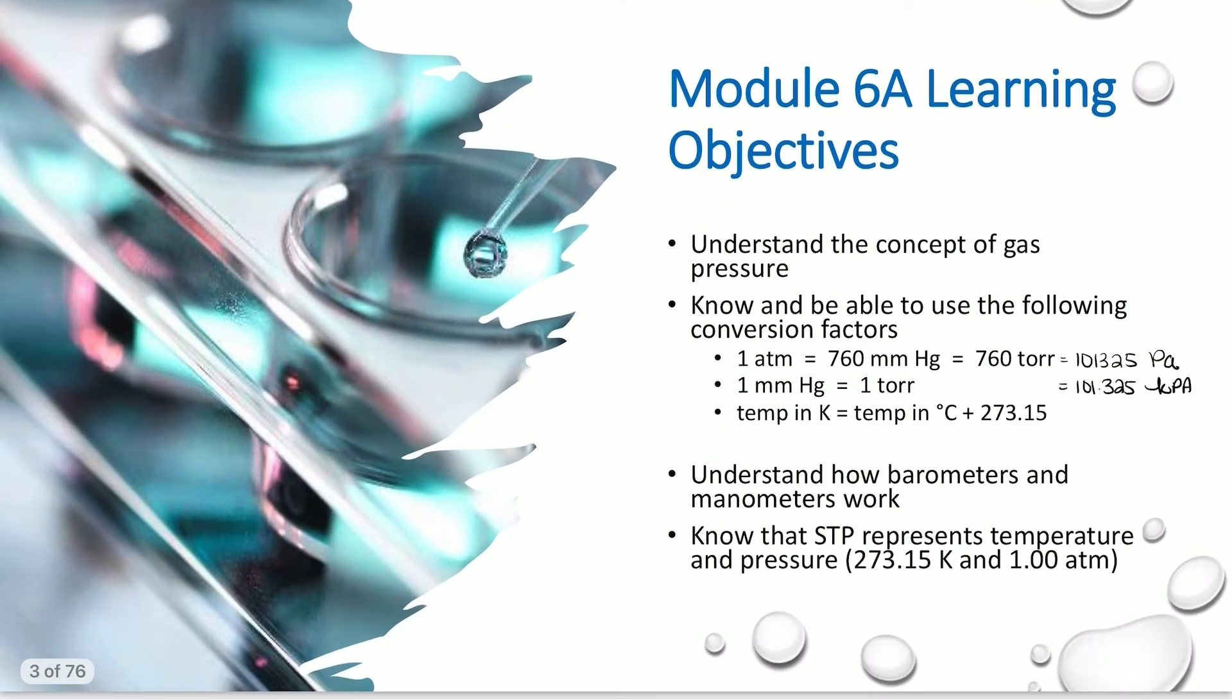For Module 6A specifically, we're going to start delving into this concept of gas pressure. What is gas pressure? What causes pressure in the first place? And why are gases often reported with respect to their pressure? You need to be able to use the following conversion factors. You need to know these conversion factors. 1 atmosphere is 760 torr is 760 mm Hg is 101,325 pascal, which is equal to 101.325 kilopascal. 1 mm mercury is equal to 1 torr. You need to remember how to calculate temperature in Kelvin. You're going to do this calculation constantly. We often record temperature in degrees Celsius, but in the calculations we need to use Kelvin.